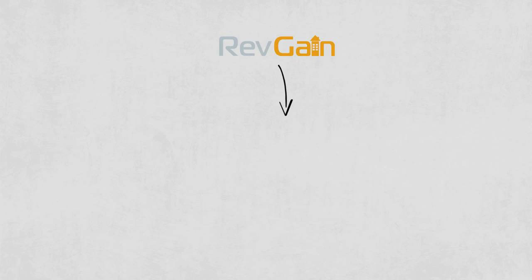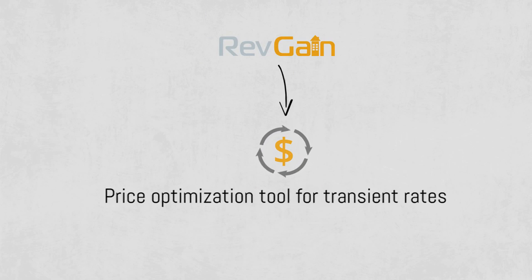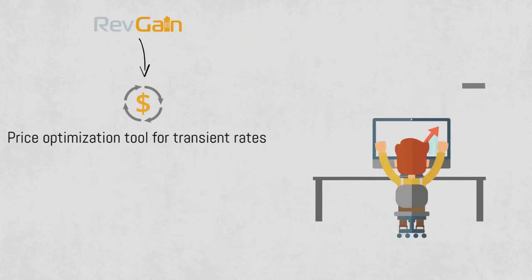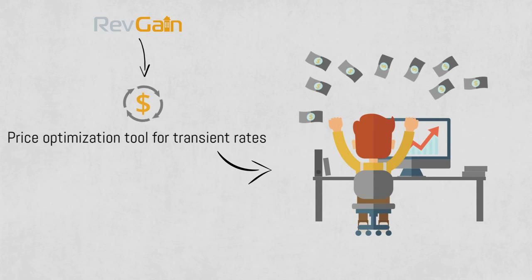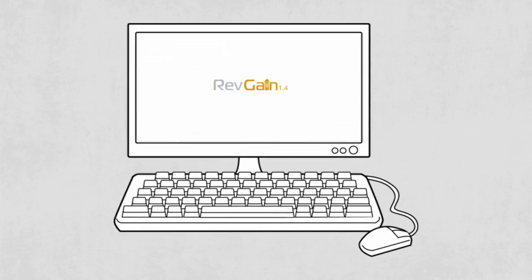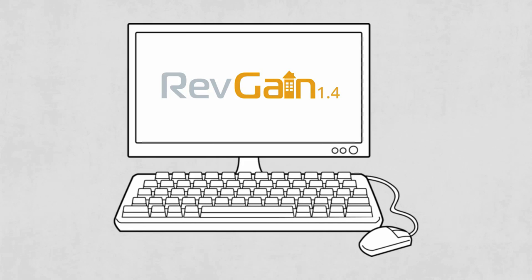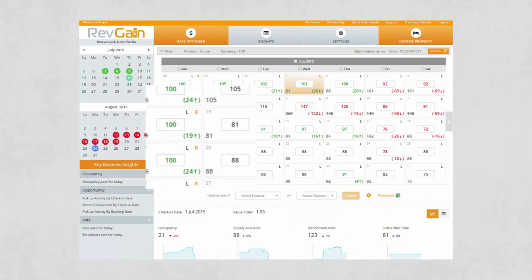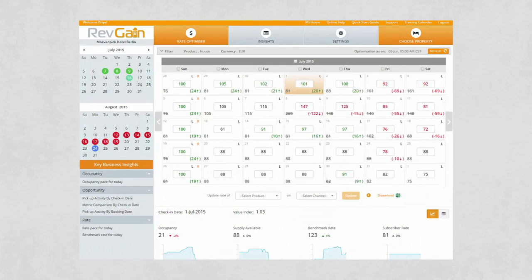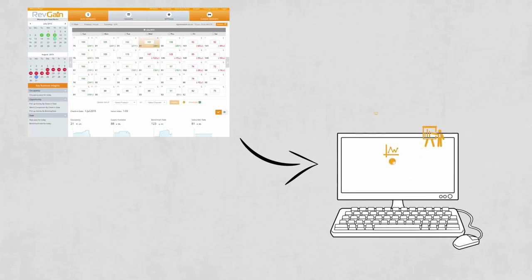Revgain is our price optimization tool for transient rates and its primary purpose is to help revenue managers make better decisions. In our latest version, we've added a host of new features to provide deeper insight and make it easier to turn information into action.